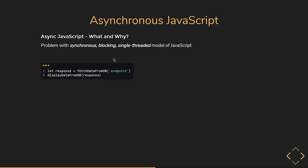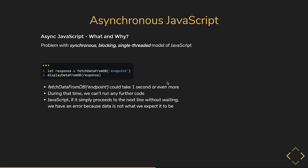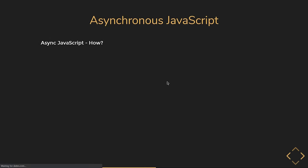What if we have a task to retrieve data from a database and then run some code on that data? We have to wait on the first line for the data to be fetched. But that could take one second or more, and during that time we can't run any further code. If JavaScript simply proceeds to the next line without waiting, we have an error because the data is not what we expect. So we need a way to have asynchronous behavior with JavaScript.